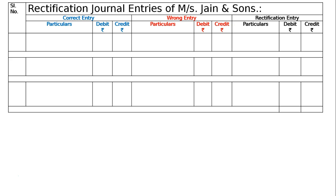Hence we have to prepare three columns: one for serial number, one for correct entry, one for wrong entry, and one for rectifying entry. The first case being: purchase return book total of 400 has not been posted to the ledger.